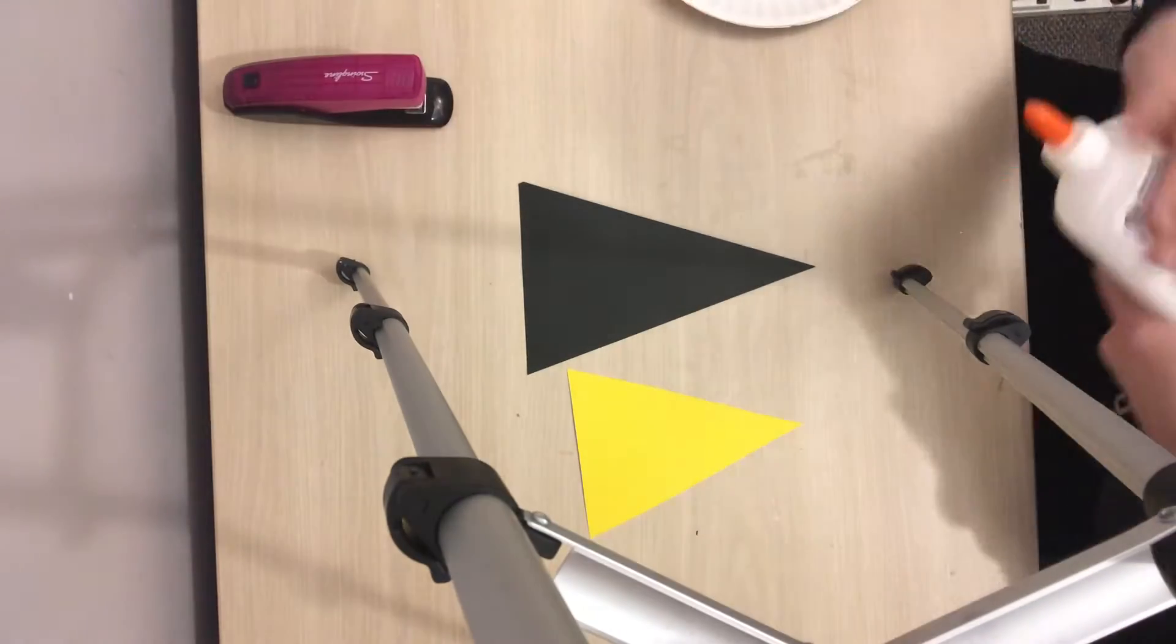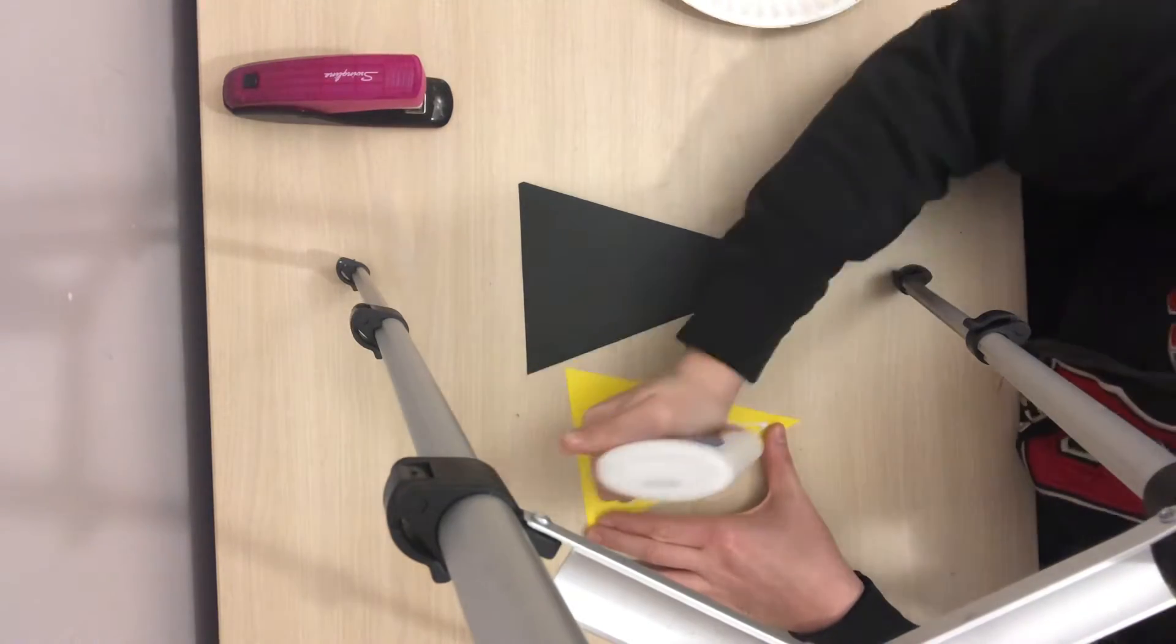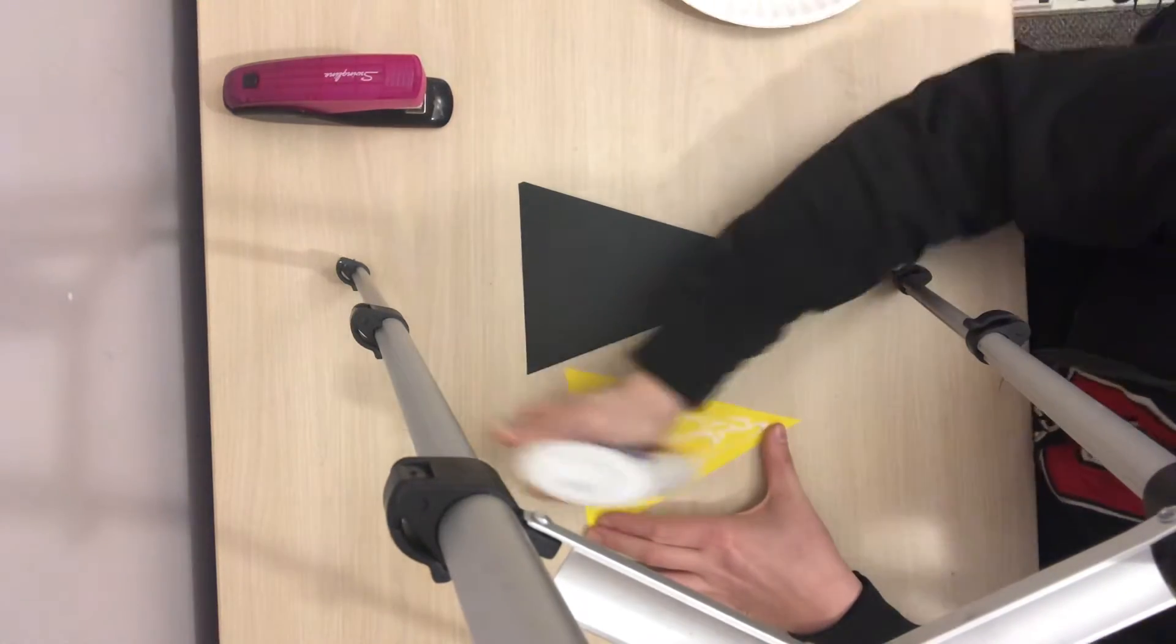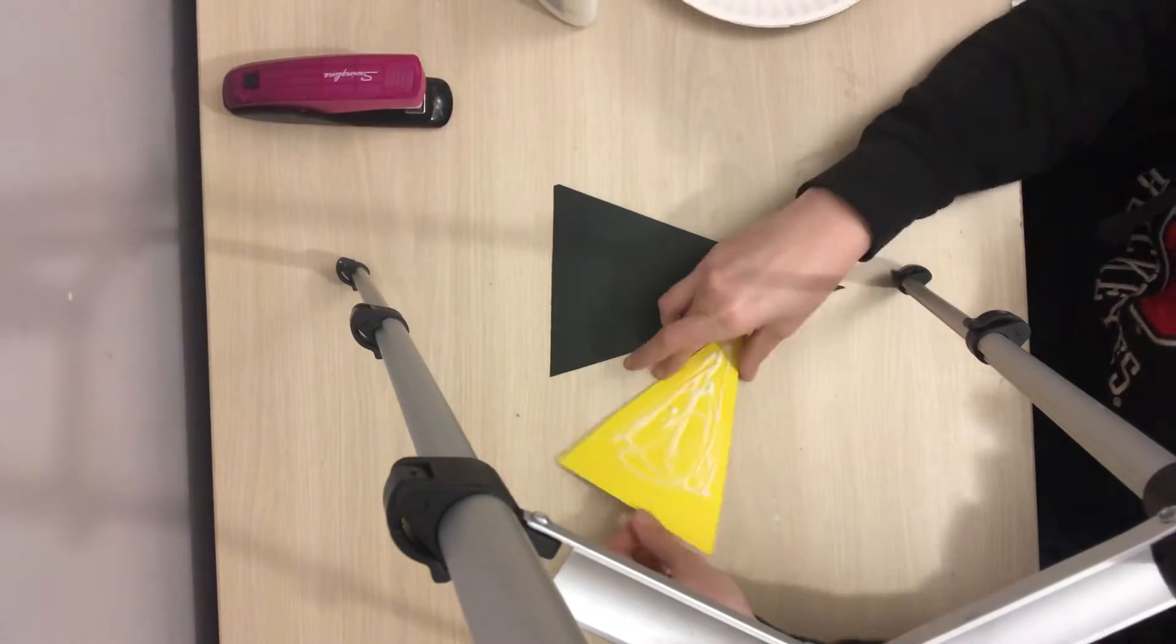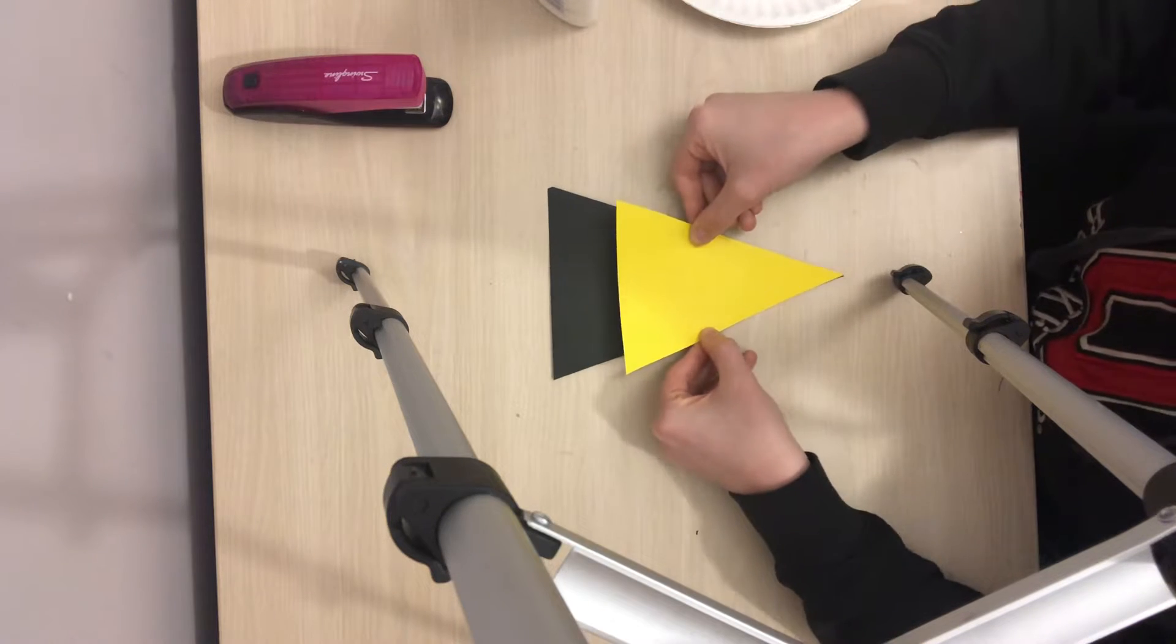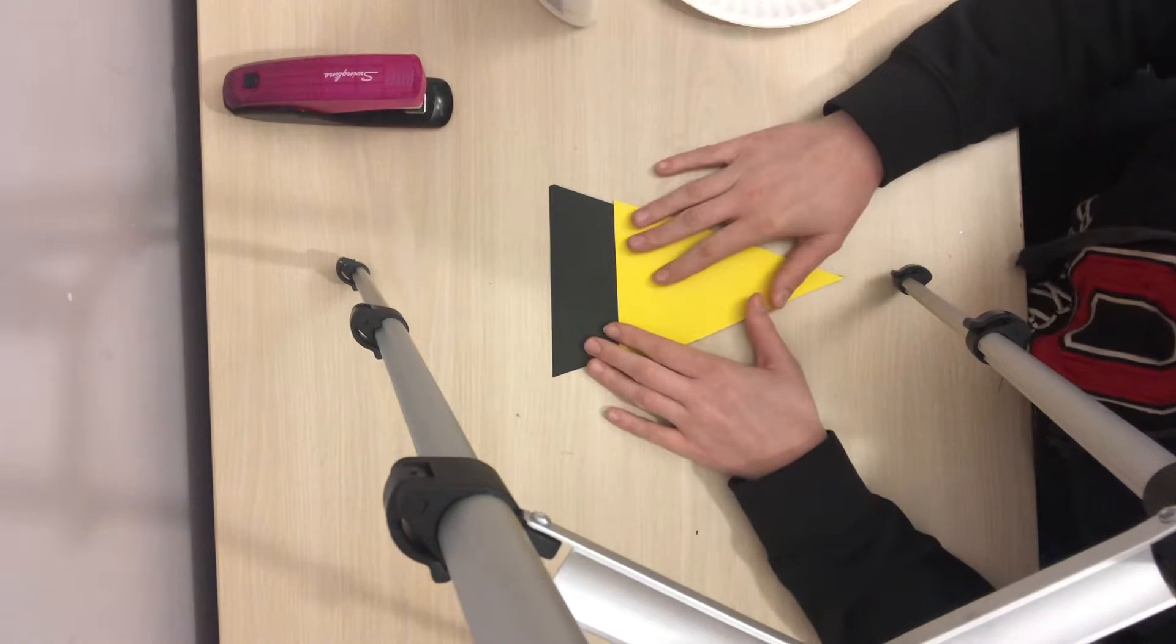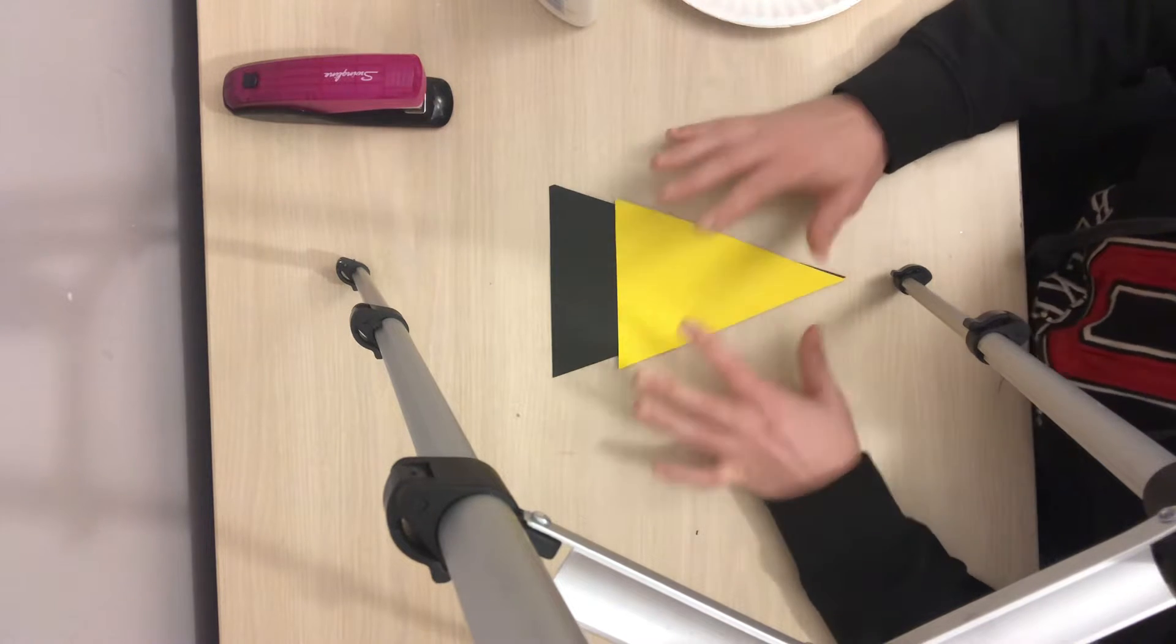Next, you're going to take your yellow and your black triangles. And on the yellow one, you're going to put glue. And then you're going to stick it on the black. You want to leave some room at the top. Pause here.